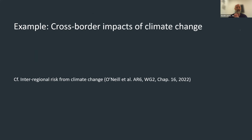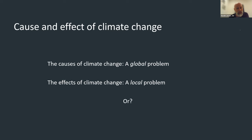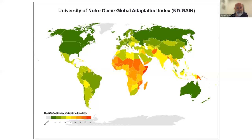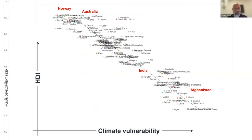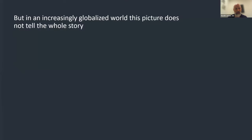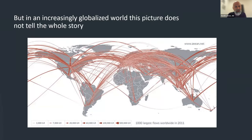Moving to an example: I will talk about cross-border impacts of climate change, because this illustrates very clearly the importance of the socioeconomic signal when studying impacts of climate change. The causes of climate change are a truly global problem, whereas the effects have mostly been studied in isolation in each country, not taking imported climate risks into account. In an increasingly globalized world, the usual picture — plotting all countries against climate vulnerability on one axis and human development index on the other, seeing that they nicely align in a straight line — is perhaps not the whole story.